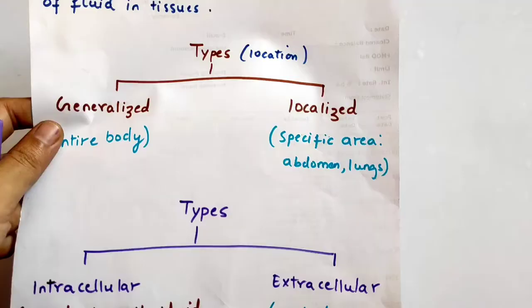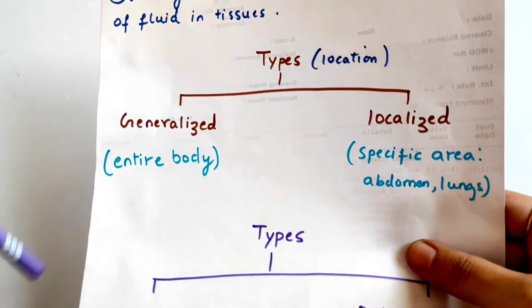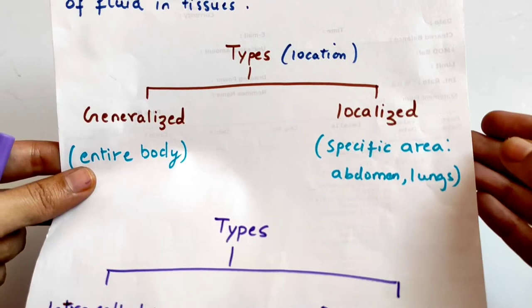Now the second topic is types of edema. On the basis of location, the first classification is generalized edema and localized edema. Generalized means what we see in the whole body. Localized means what we see in specific areas, such as the abdomen, lungs, extremities, and in conditions like long-standing posture, our feet and legs.